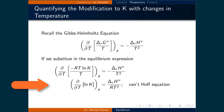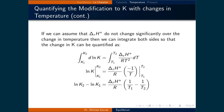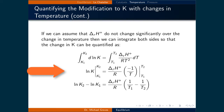This equation is also called the Van't Hoff equation. If we assume that the standard enthalpy of the reaction does not change significantly over the temperature range, we can integrate both sides from K1 to K2 and from T1 to T2. The result is that ln(K2) minus ln(K1) equals the standard enthalpy of the reaction divided by R times (1/T1 minus 1/T2). This equation allows us to quantify changes to the equilibrium constant K with changes in temperature.